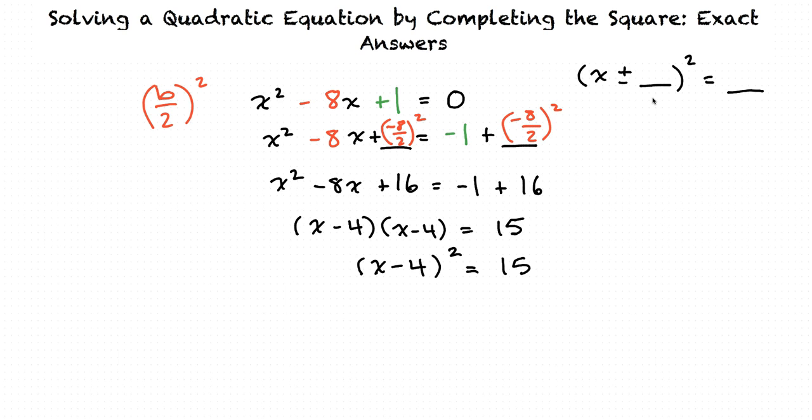Now that we have our equation written as x minus 4 squared equals 15, we can now solve for x. The opposite of something squared is to take a square root, so we will take the square root of both sides. It now becomes x minus 4 equals plus or minus square root of 15.